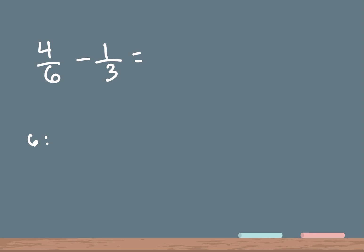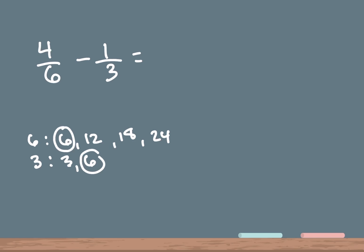I'm gonna take the first bottom number, which is 6. So 6 times 1 is 6, 6 times 2 is 12, 6 times 3 is 18, and 6 times 4 is 24. The next bottom number is 3. So 3 times 1 is 3, and 3 times 2 is 6. There we have our common denominator of 6.